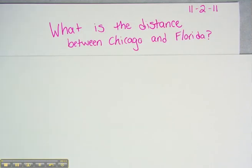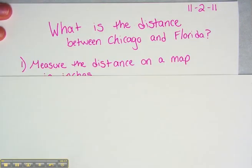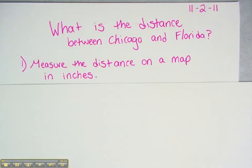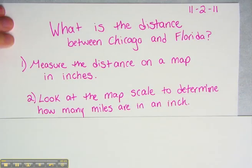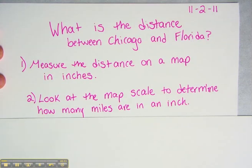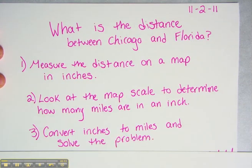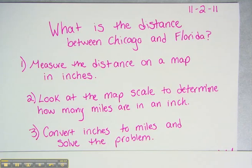This lesson is going to teach you how to measure distance on a map. For this we're going to have to take three steps. Step number one, we are going to have to measure the distance on our map in inches between Chicago and Florida. Step number two, we're going to have to look at the map scale to determine how many miles are in an inch. And finally, step number three, we're going to have to convert the inches to miles and then solve our problem.